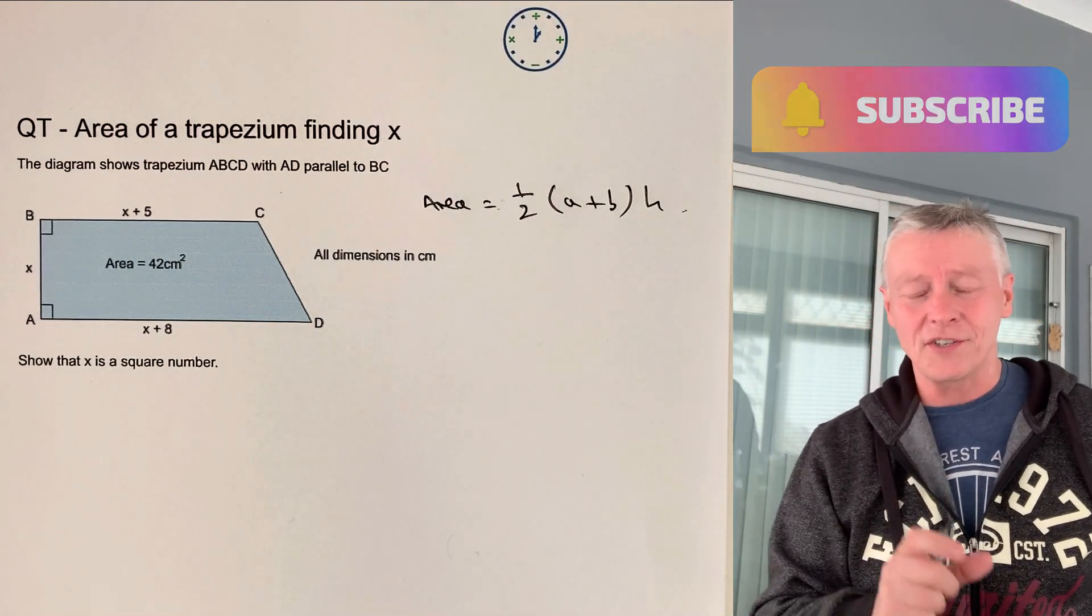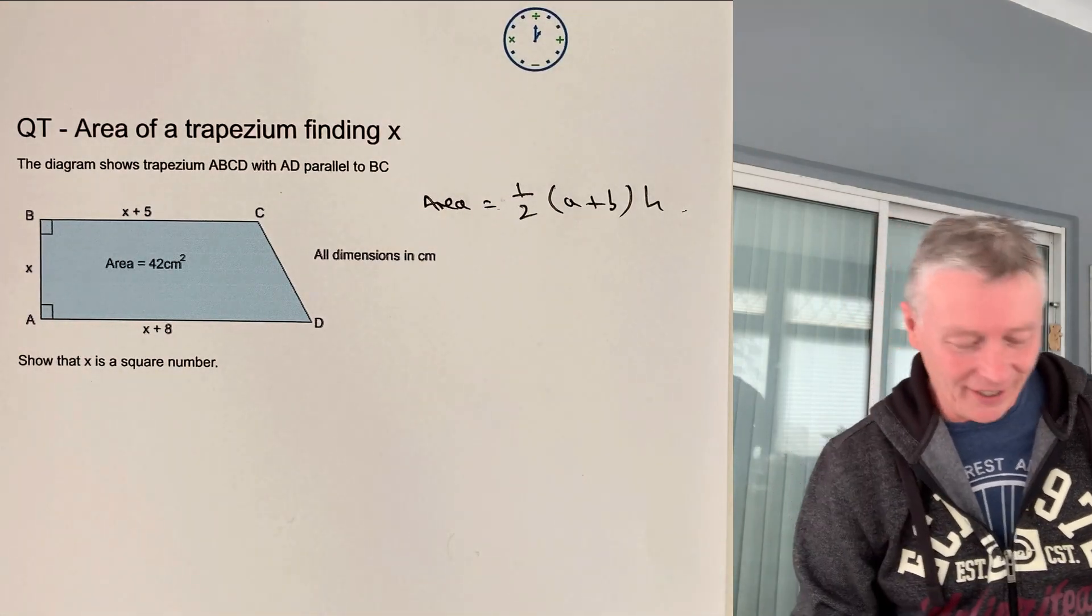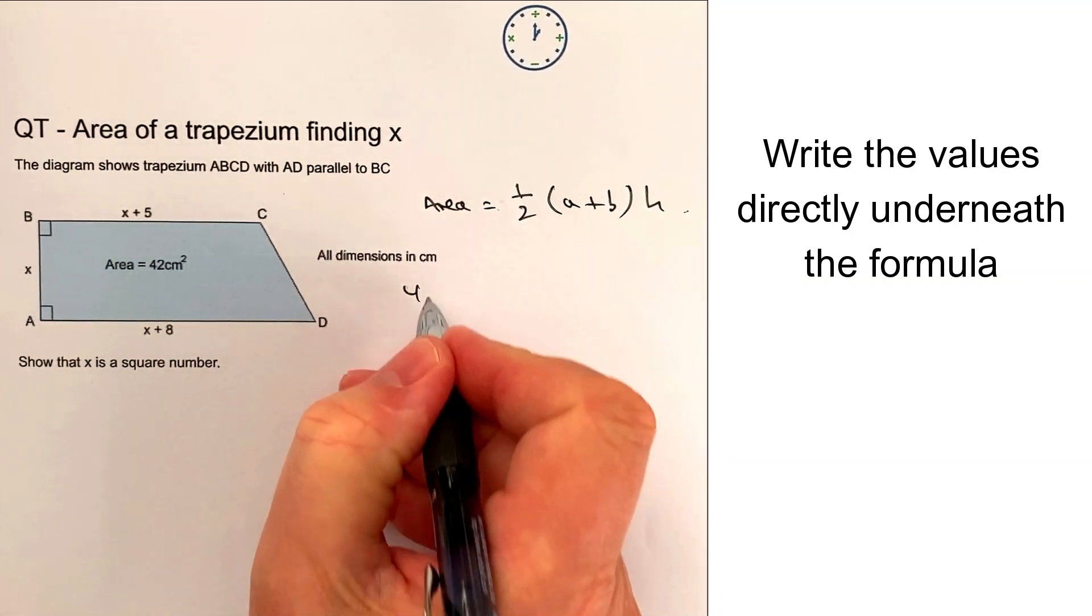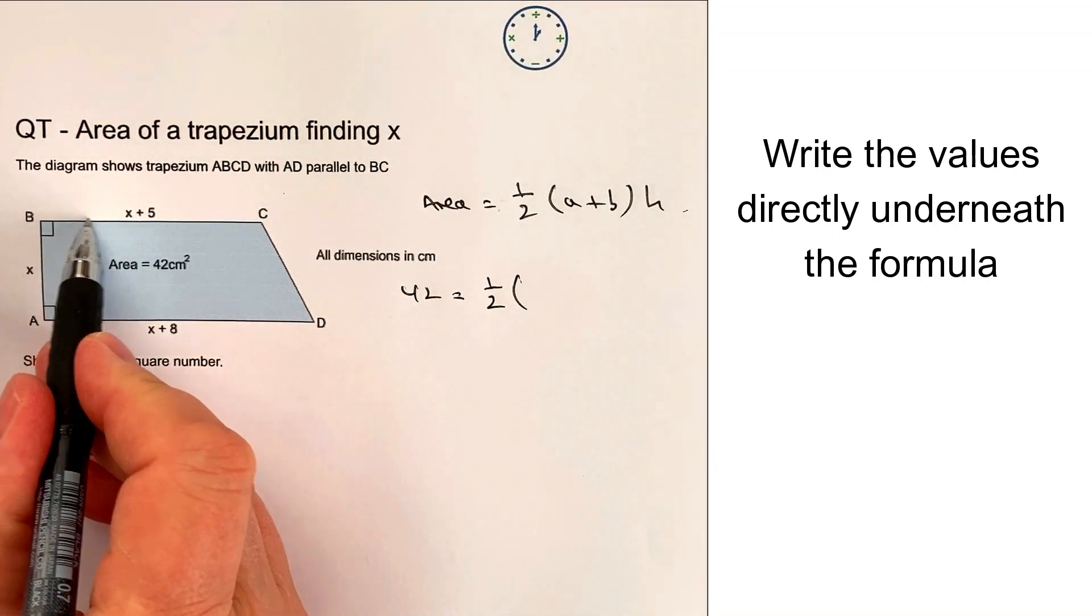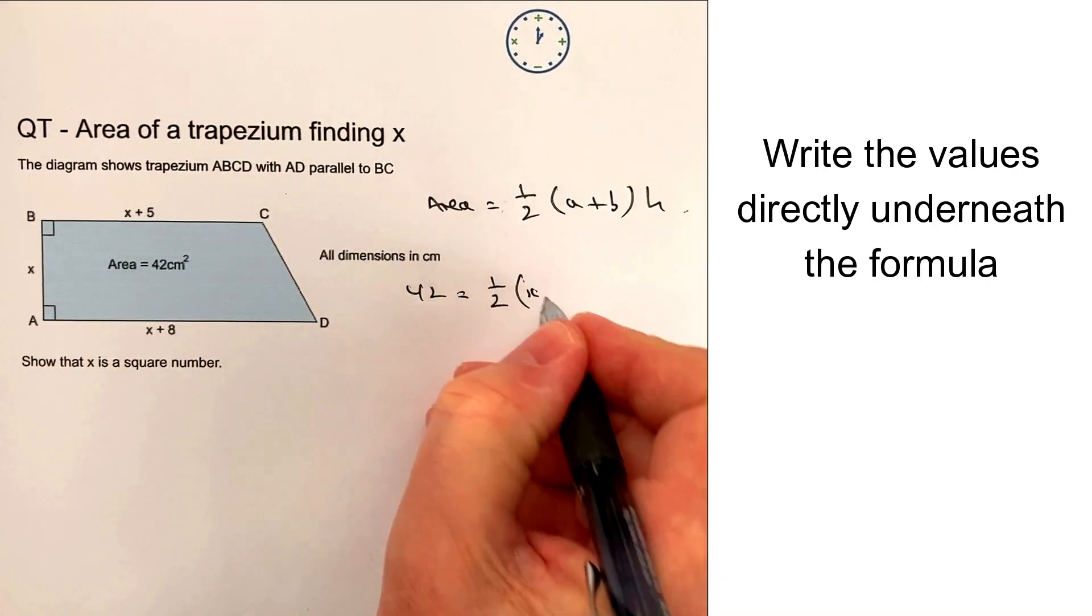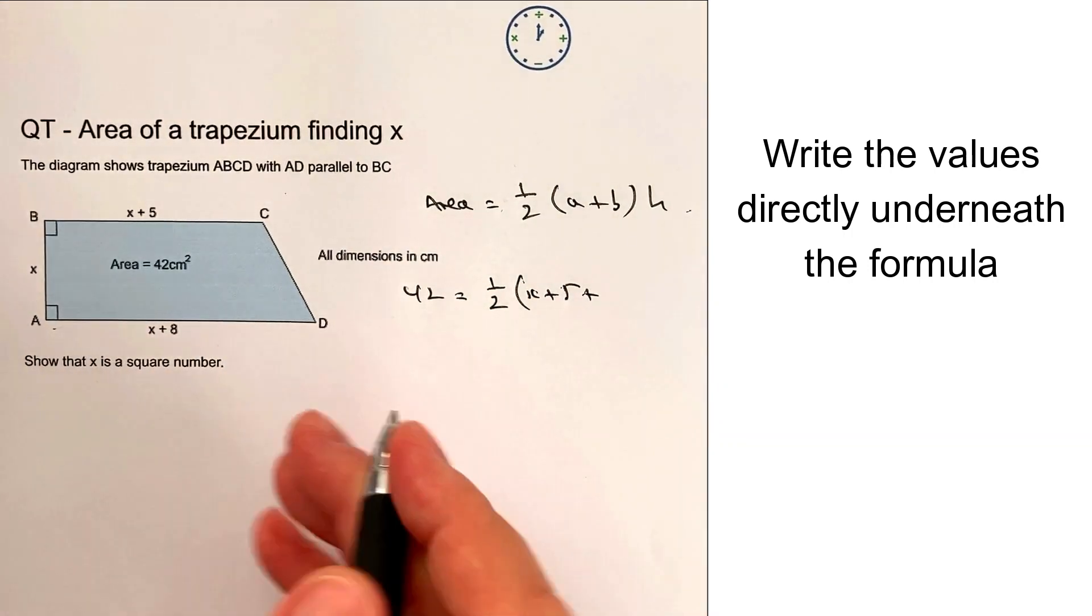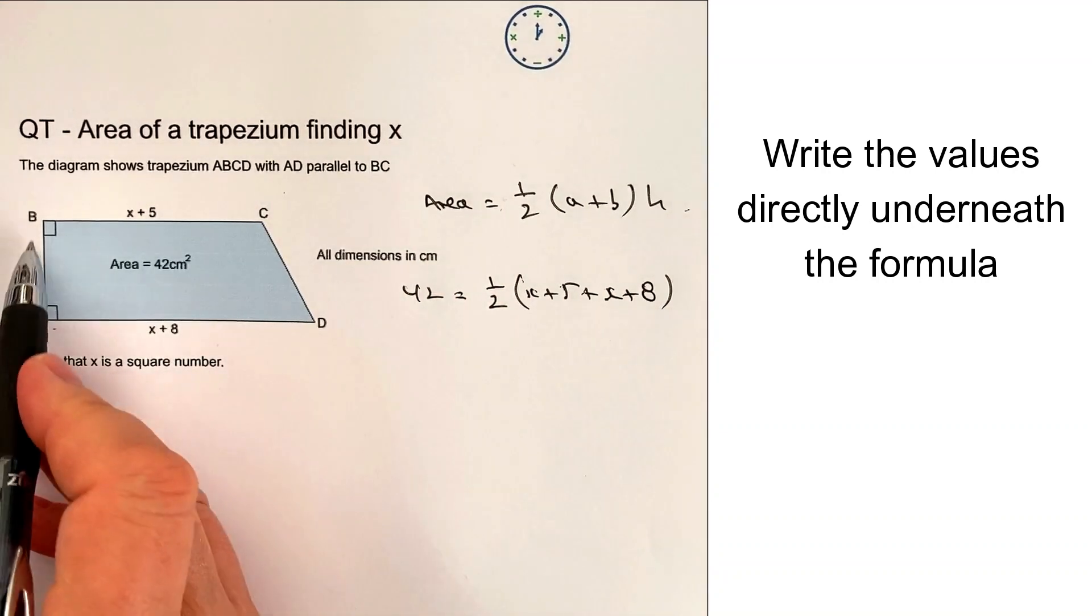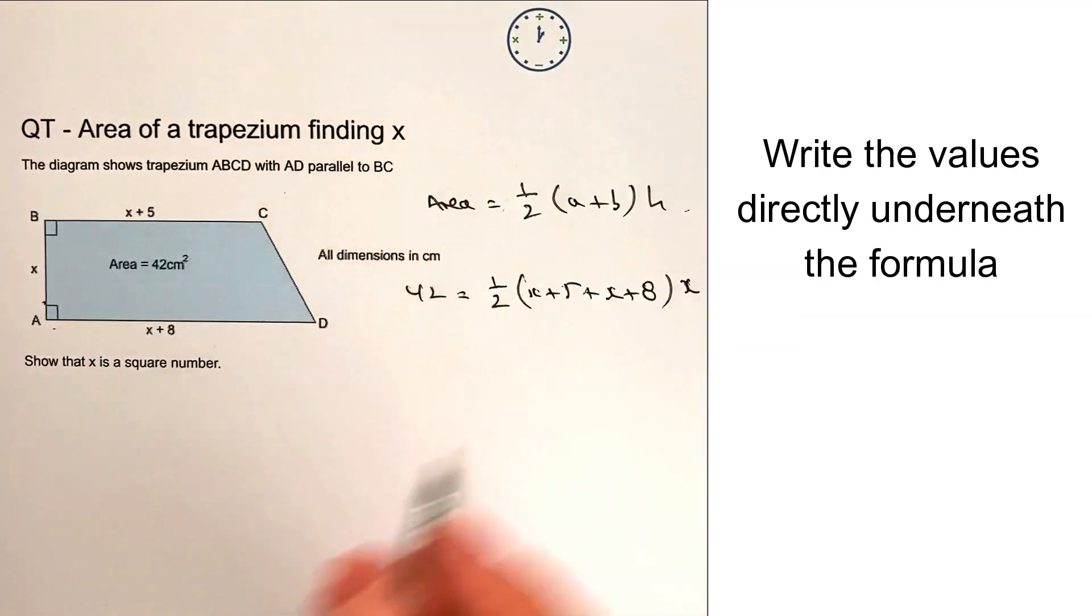The main issue with this is the values of a, b and h and you'll see what I mean. Okay, so we've got the area which we've given as 42 and that equals a half. Now a is this length along here which is x plus 5 and b is this length along here which is x plus 8 and then we need to multiply that by h which is the value in this particular question of x.